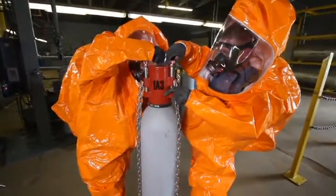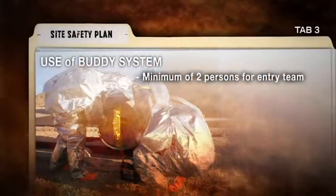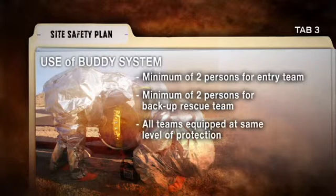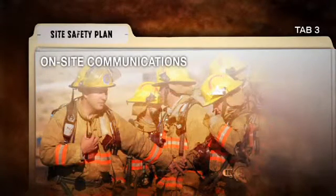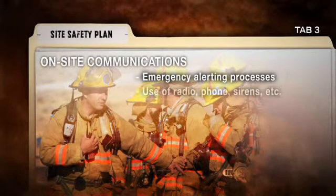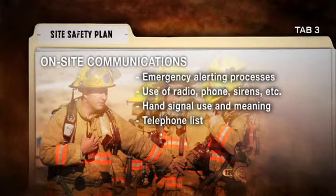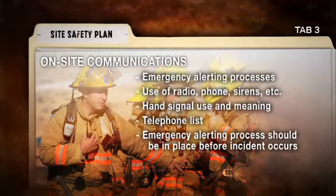The plan should address the concept of the buddy system: a minimum of two persons are required for each entry team, a minimum of two persons are required for a backup rescue team, and all persons on all teams need to be equipped at the same level of protection. Details of on-site communication will be included in the plan, covering emergency alerting processes, use and description of radio communication, phone, sirens, instructions on the use and meaning of hand signals, and a telephone list of the nearby community. The emergency alerting process should be in place long before an incident occurs and updated frequently.